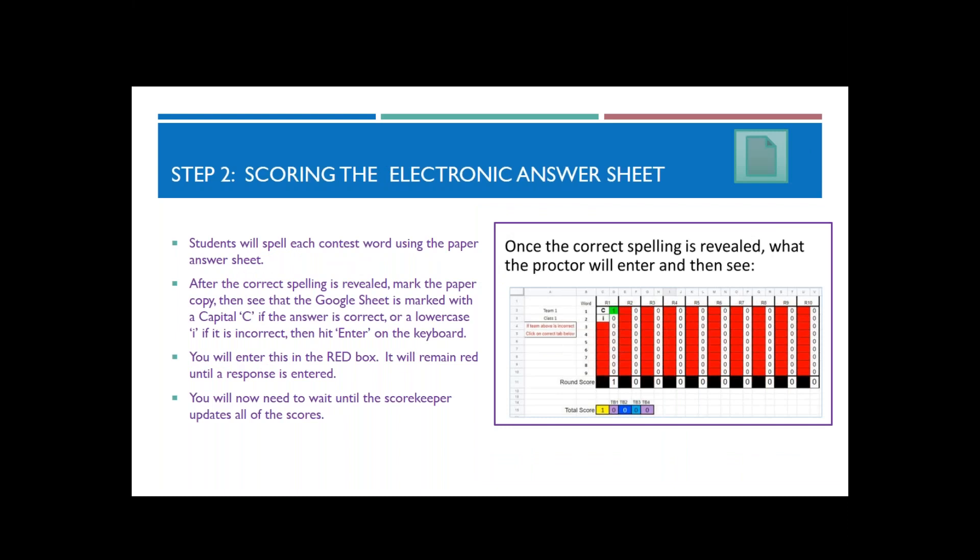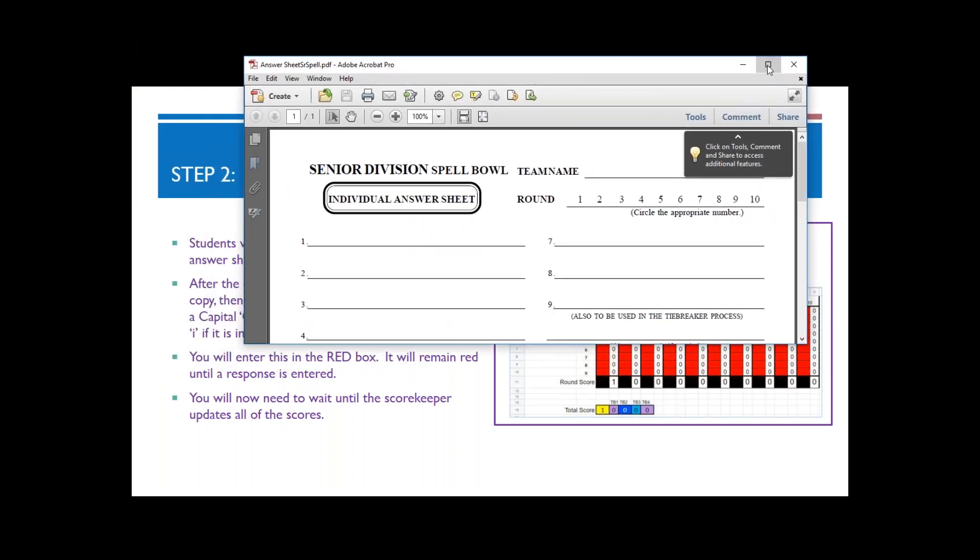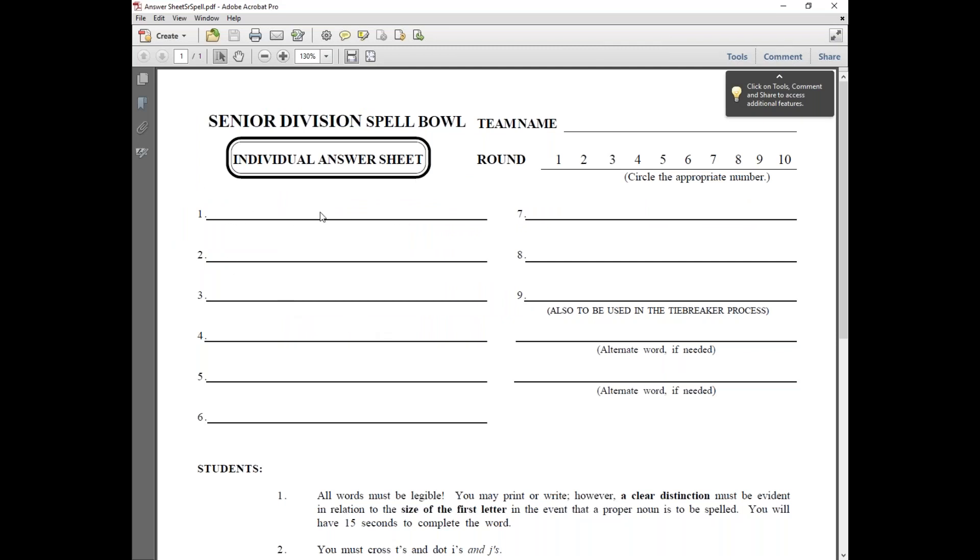The students will spell each contest word using the paper answer sheet. This is what the paper answer sheet looks like. They will put their spelling word right here on the line. They should have a team name and you'll circle the round number as you go. The MC will reveal the correct spelling of the word. You'll check the spelling here. If it is right, leave it. If it is incorrect, just put an X through the number. If there are any challenges and we have to use an alternate word, we've got a couple of extra lines here for you.